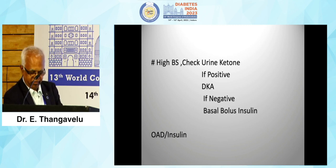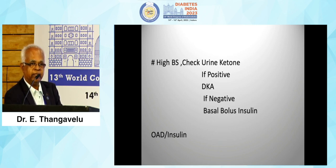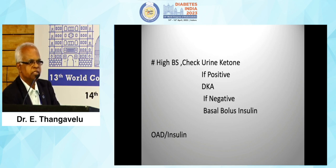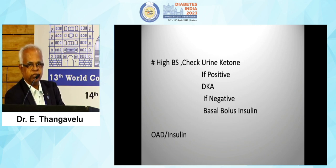If ketones are negative, always start basal bolus insulin. Even with HbA1c of around 7, 7.5, or 8, we have to give a minimum dose of insulin. Insulin is not simply for reducing blood sugar level — we must also consider the pleiotropic effects of insulin.